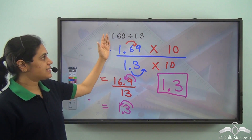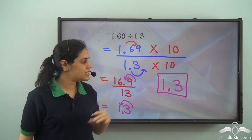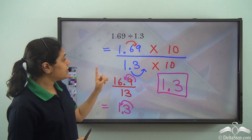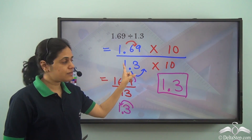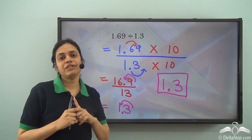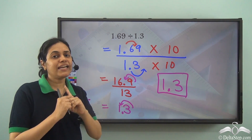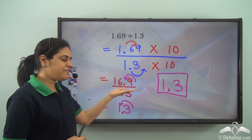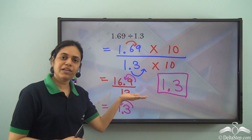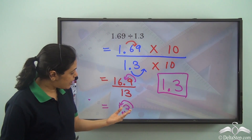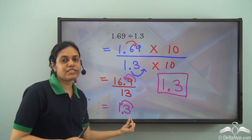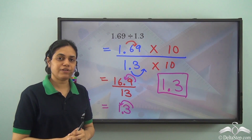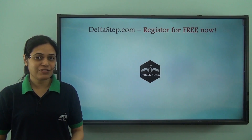So 1.69 divided by 1.3 is 1.3. When there is a decimal point in the divisor, multiply it by the right power of 10 to get rid of it first. And if there is a decimal point in the dividend, divide normally but place the decimal point accordingly in the quotient as well.